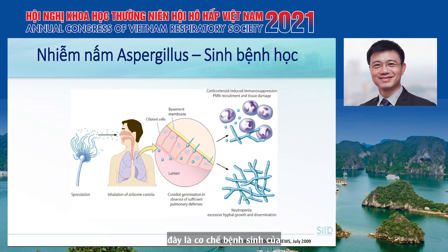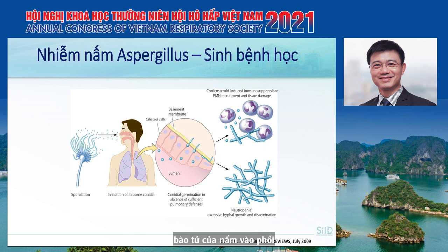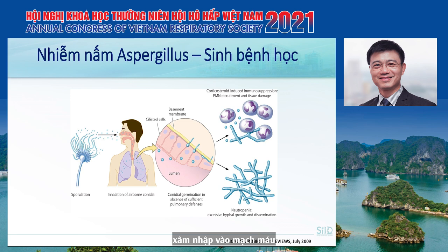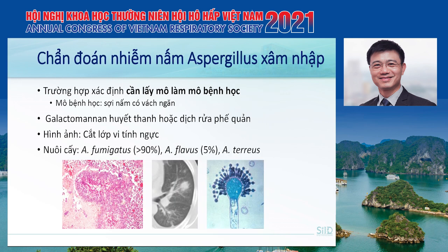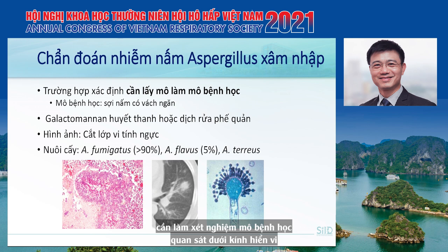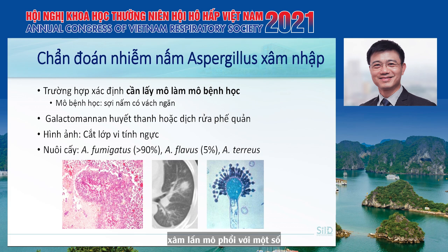This is the pathogenesis of aspergillosis. Once the patient inhales the spore of Aspergillus into the lung, the spore will germinate into hyphae and invade the lung tissue and blood vessels. The definite diagnosis of invasive aspergillosis requires tissue histopathology obtained by bronchoscopy to see septate hyphae invading the lung tissue with surrounding bleeding or hemorrhage.